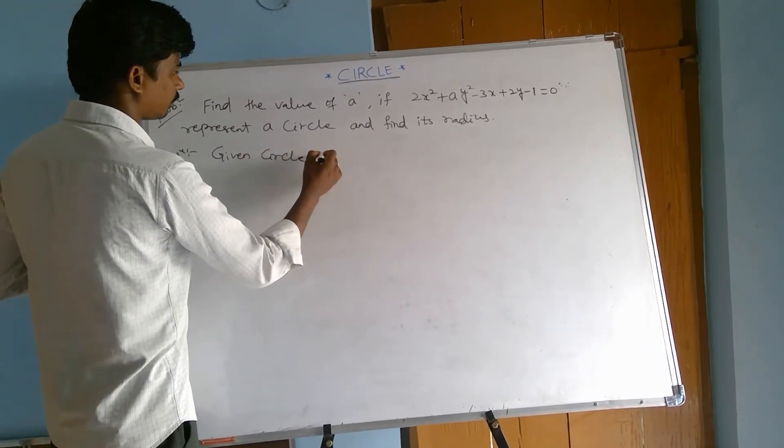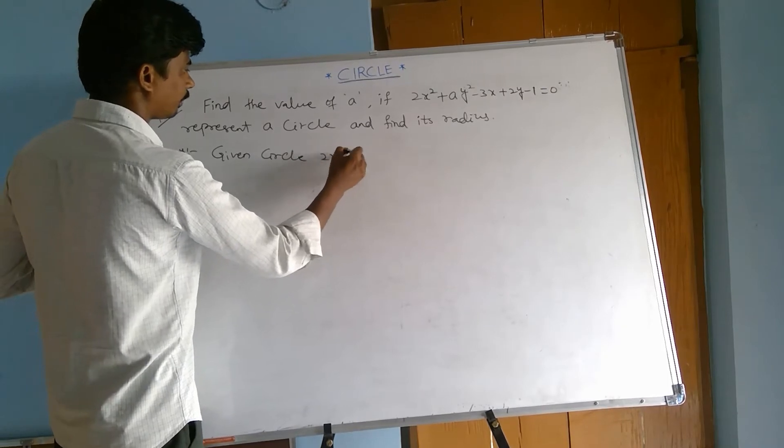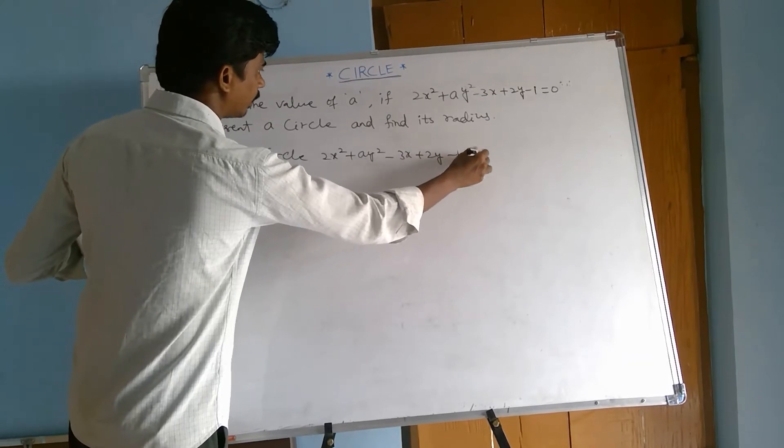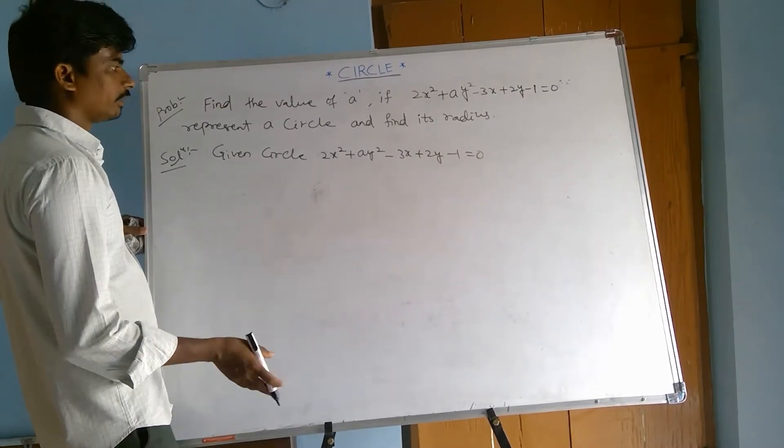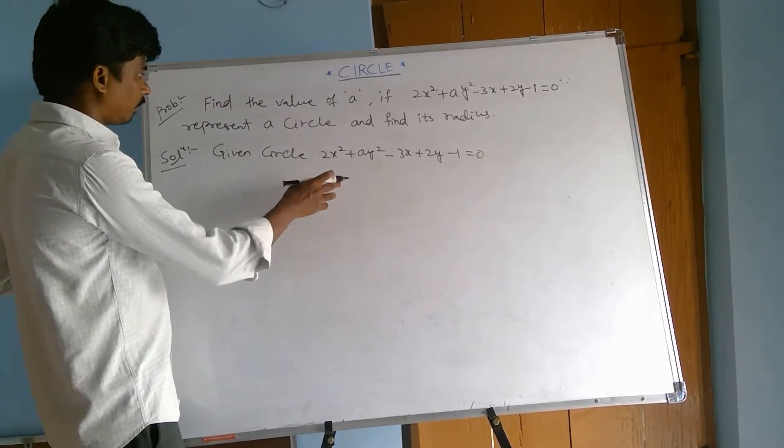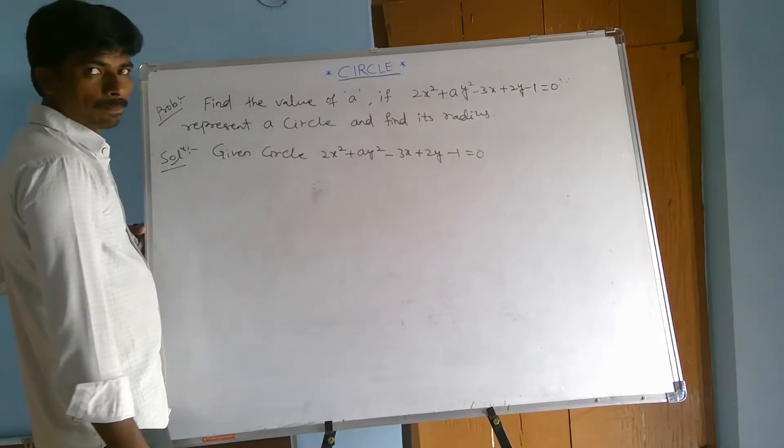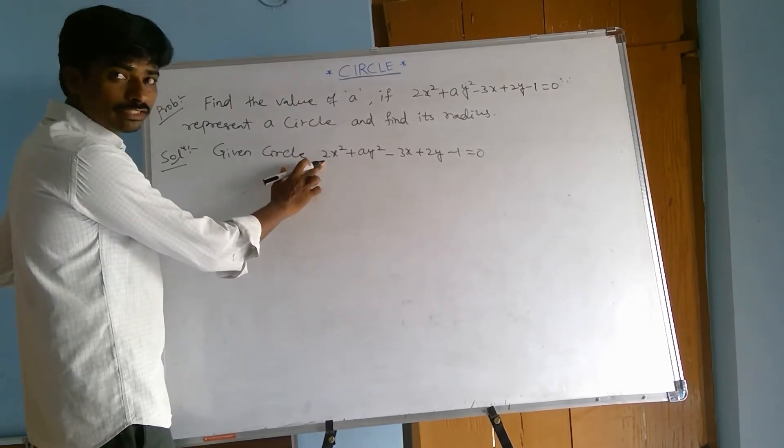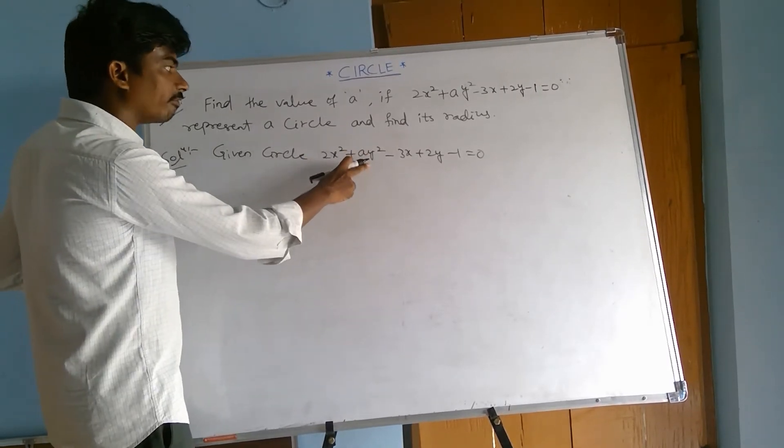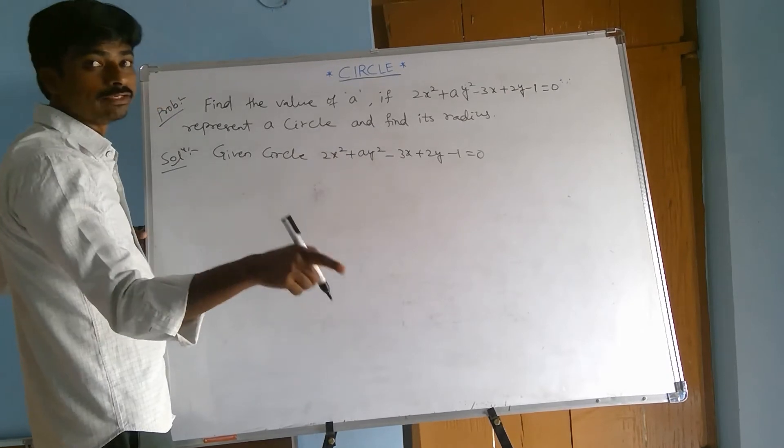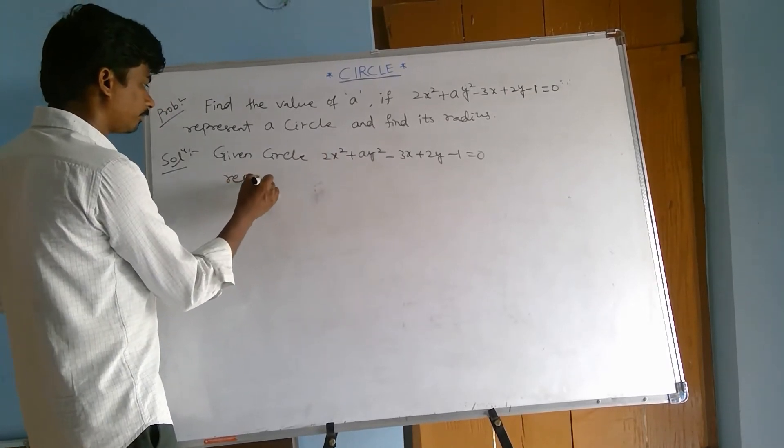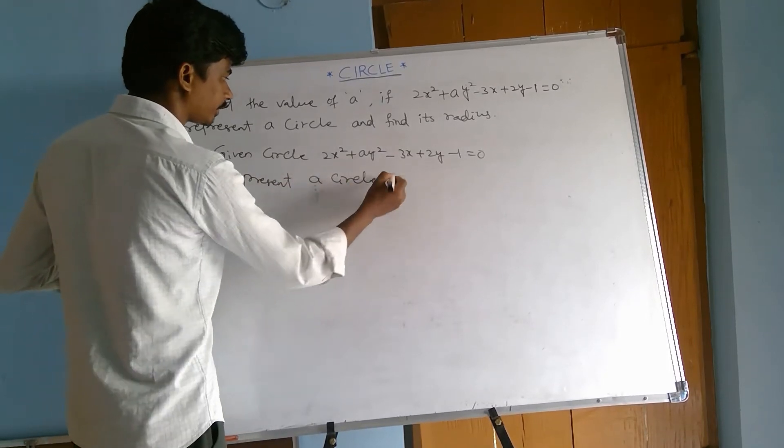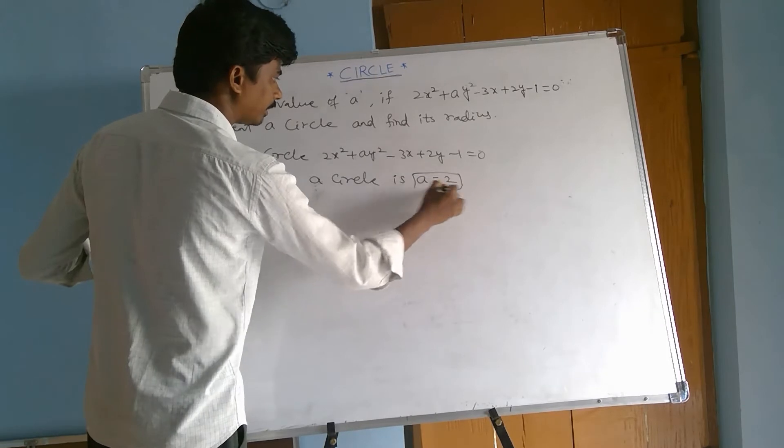Given circle: 2x squared plus a y squared minus 3x plus 2y minus 1 equal to 0. See here, how do we find the a value? Now to represent a circle, the x square coefficient must equal the y square coefficient. Both are 2, therefore a equals 2.